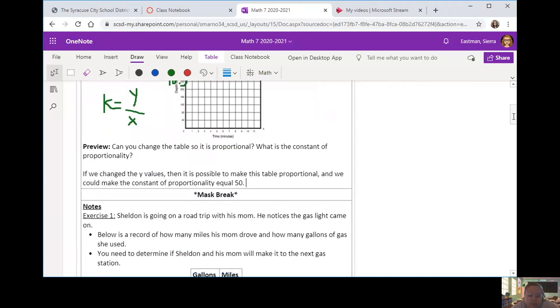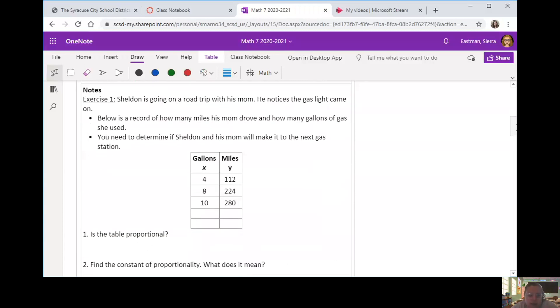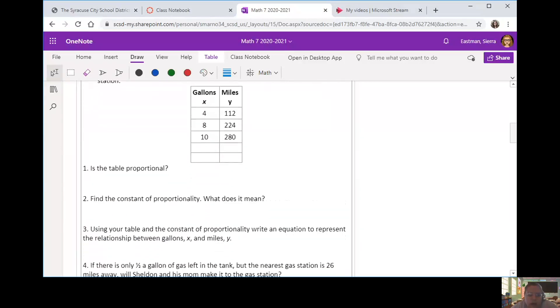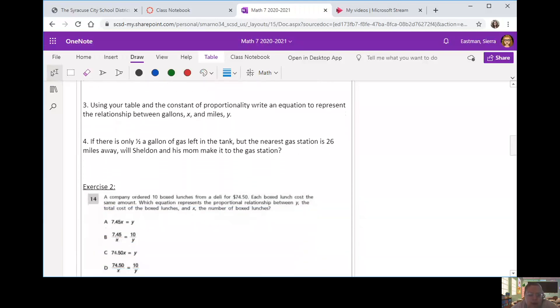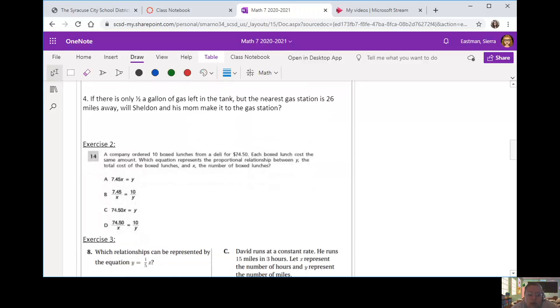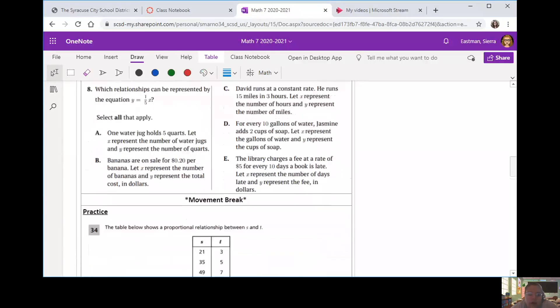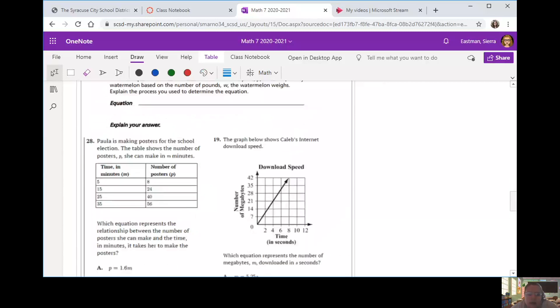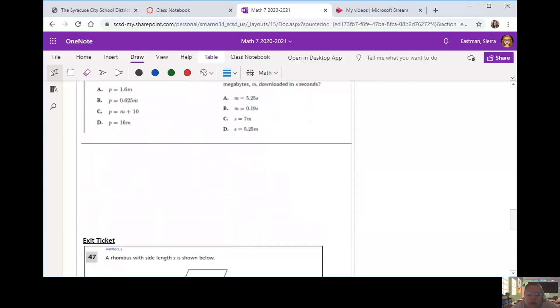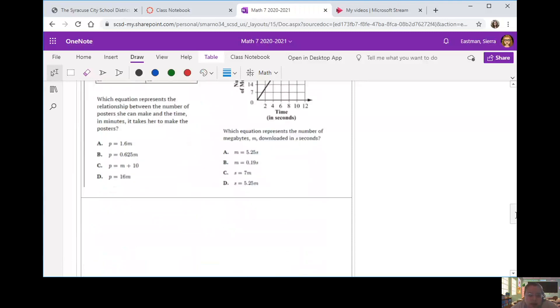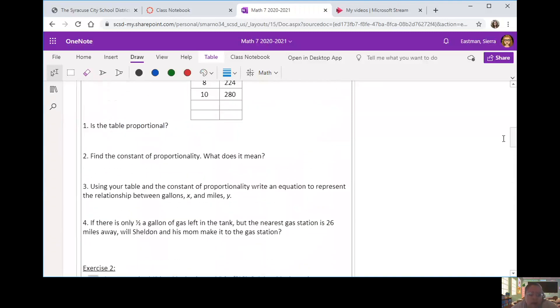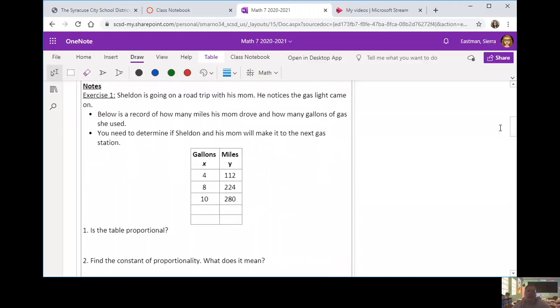Awesome. Let's go down to exercise two. We're going to take a look at another table and do kind of the same thing. Is it proportional? Find the constant. We're going to write an equation and then use that equation to help us out. And then all of the rest of our practice are multiple choice questions and some writing questions from the real state test.